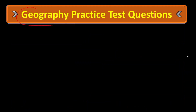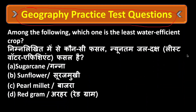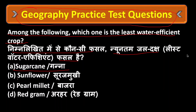Geography practice test question: Among the following, which one is the least water-efficient crop? Option A: Sugarcane, Option B: Sunflower, Option C: Pearlmillet (Bajra), Option D: Red Gram.